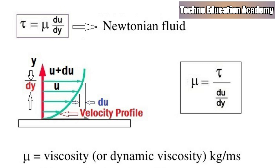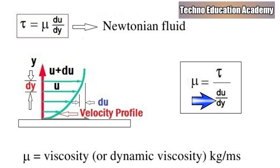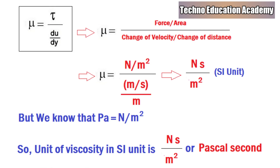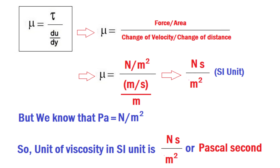Mathematically, tau is proportional to du/dy. Removing the proportionality, we introduce a constant mu, so tau = mu × (du/dy), where mu is the coefficient of dynamic viscosity. The term du/dy represents the rate of shear strain, or velocity gradient. The unit of viscosity is newton·second per meter square, or pascal·second in SI unit.